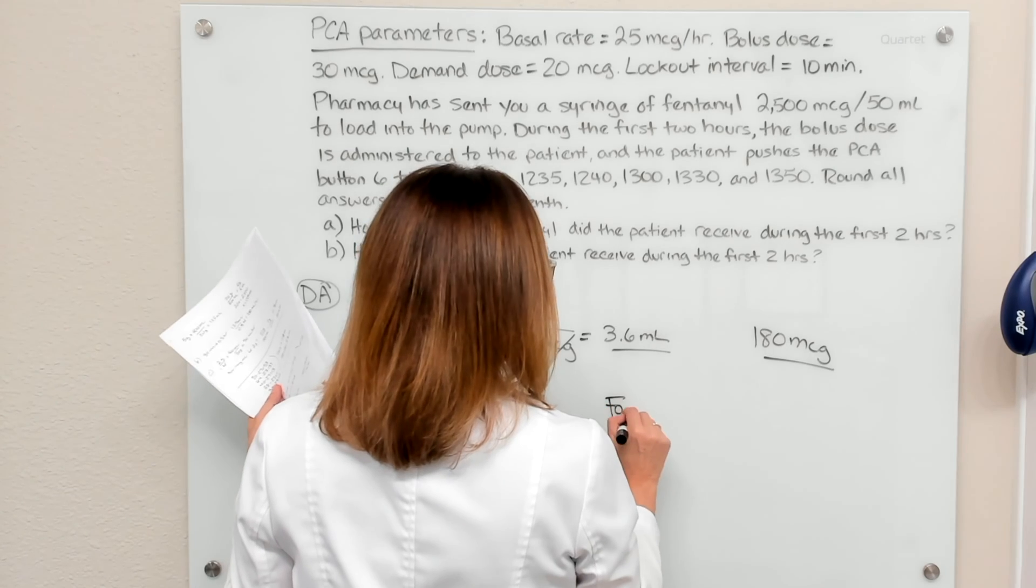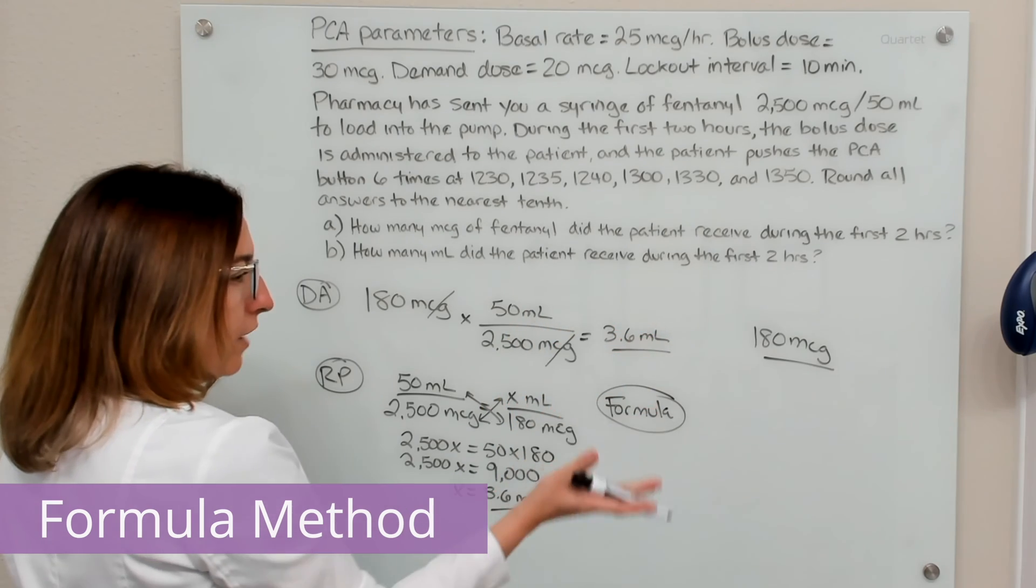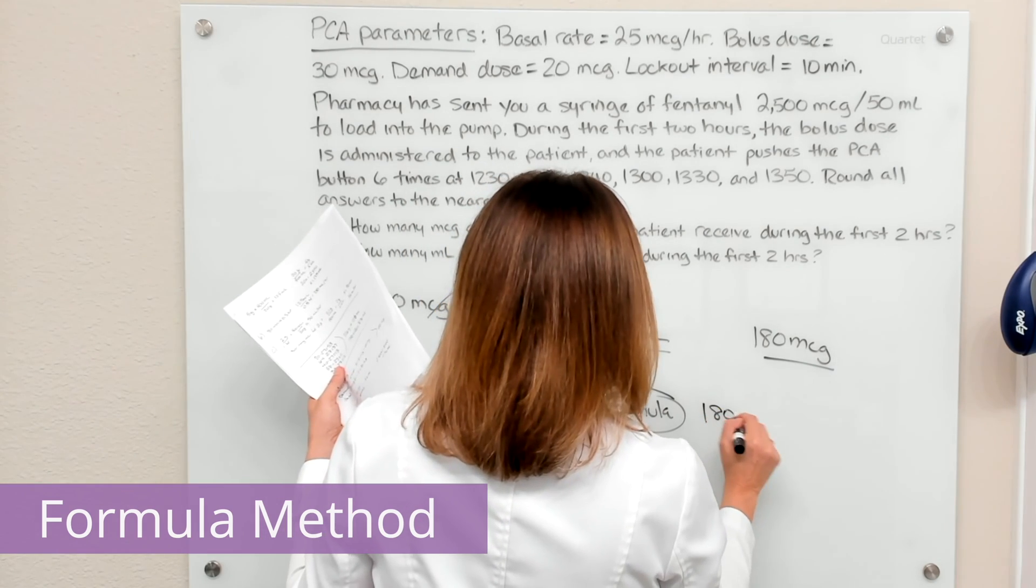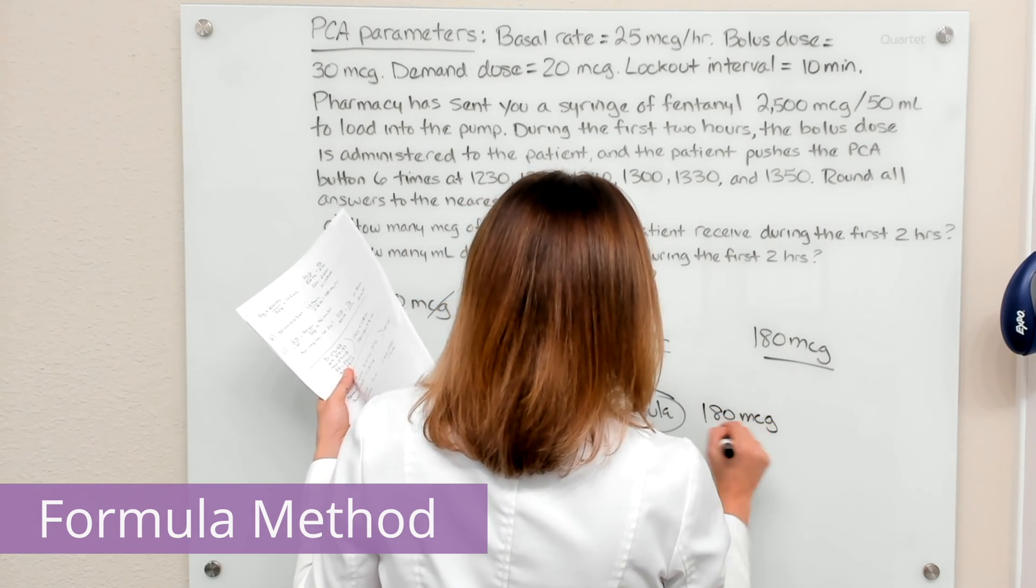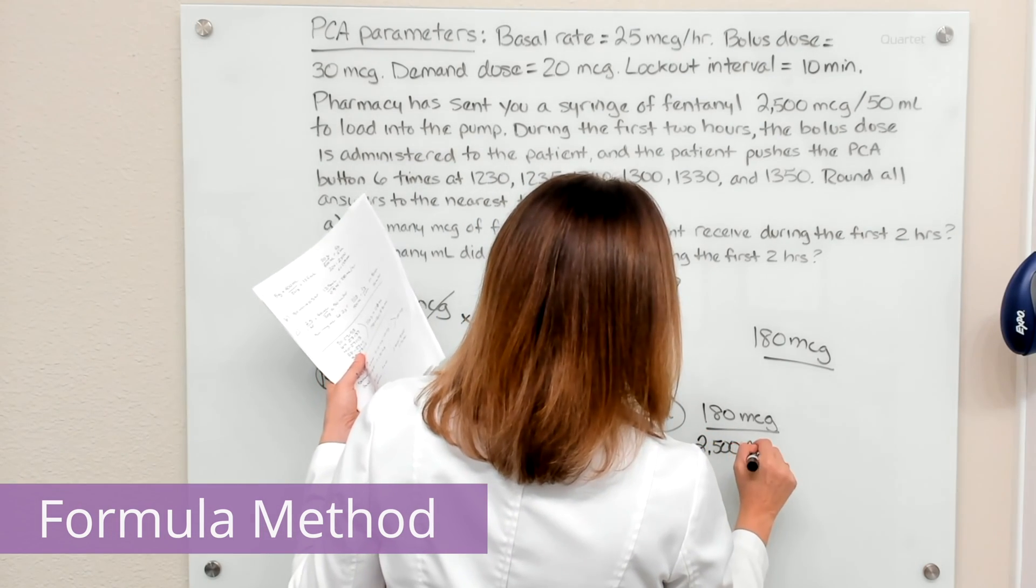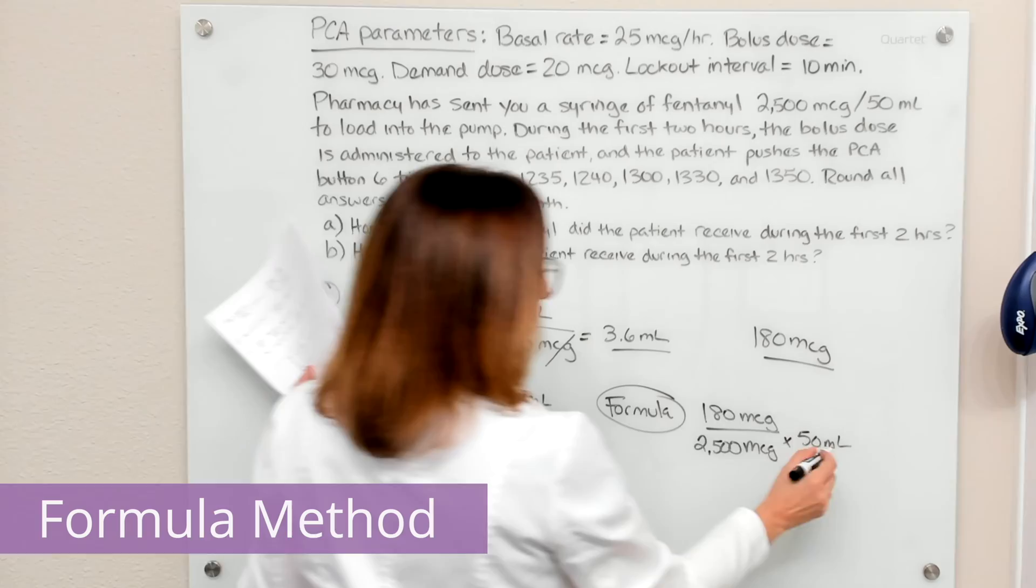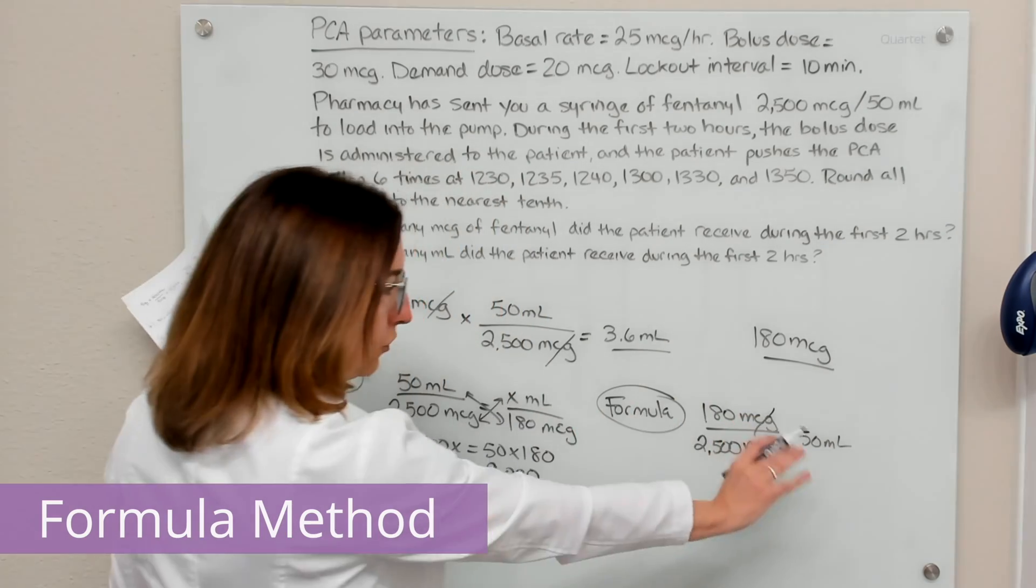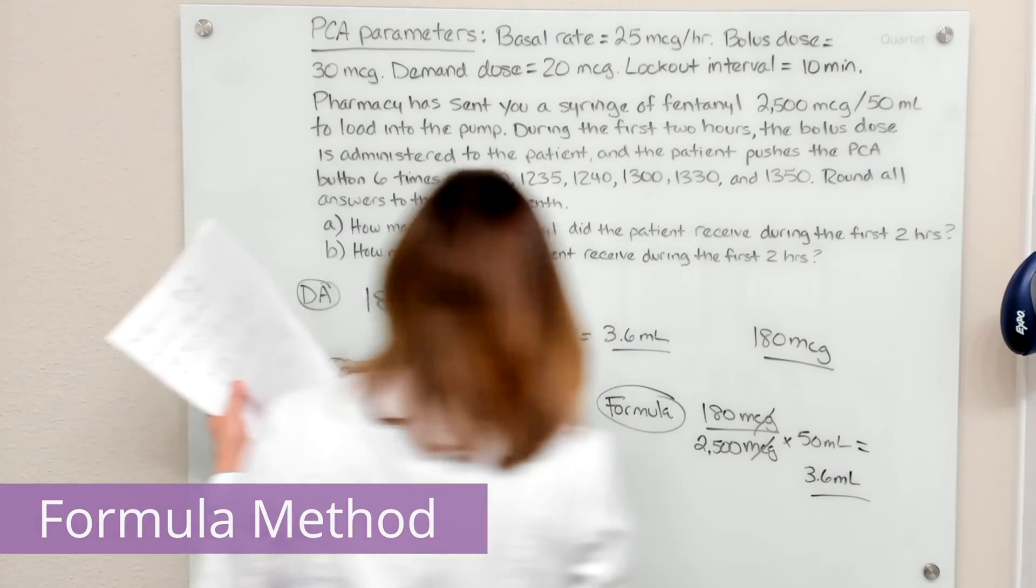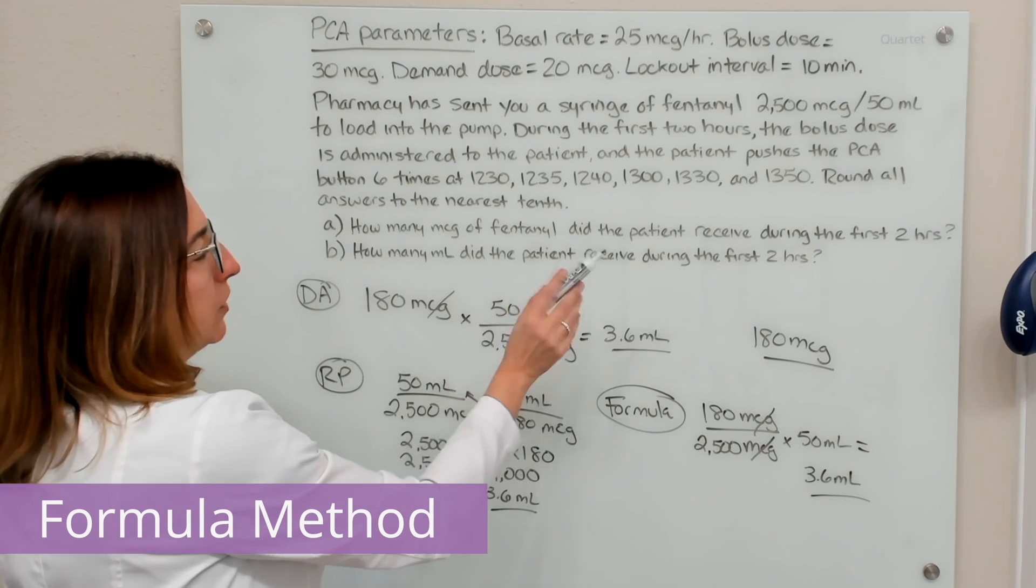And finally, I can solve this part of the problem with the formula method, which is desired over have times the vehicle. So our desired is 180 micrograms. What we have are 2,500 micrograms in 50 mLs of solution, that's our vehicle. And again, if you multiply this out, we end up with 3.6 milliliters. That's the amount the patient received during the first two hours.